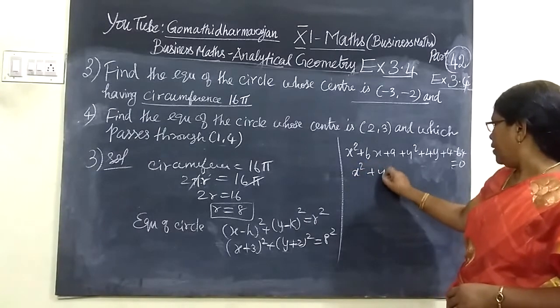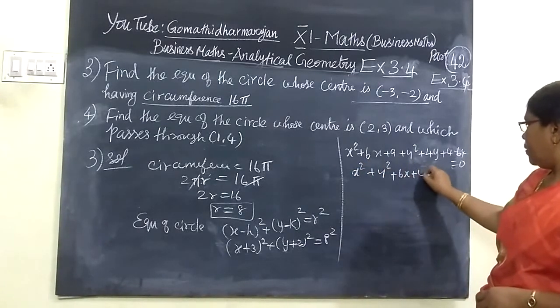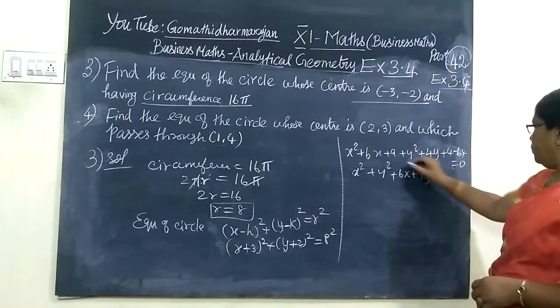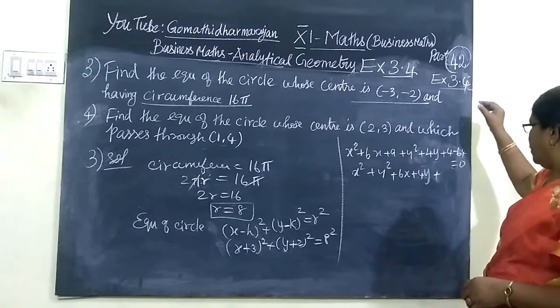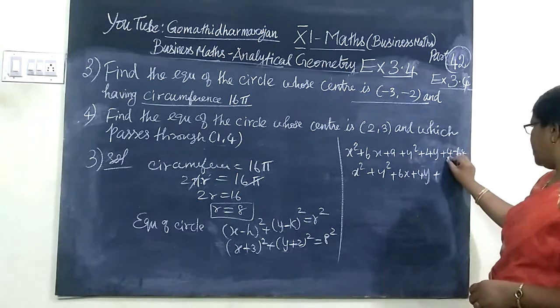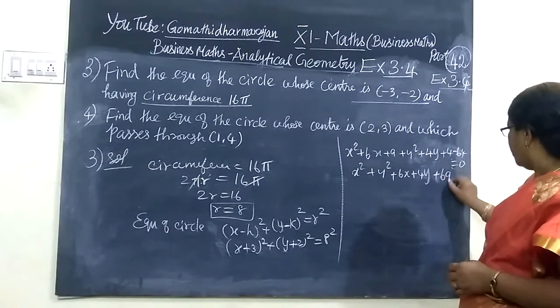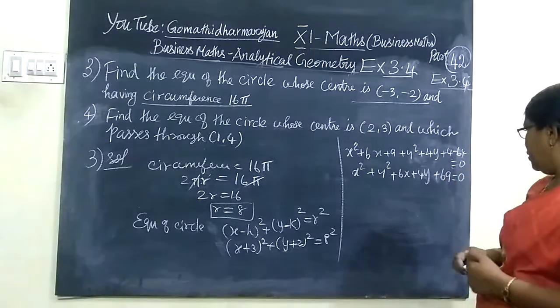x² + y² + 6x + 4y plus 9 plus 4 minus 64 equals 0. So 9 plus 4 is 13, minus 64 is -51. Therefore x² + y² + 6x + 4y - 51 = 0.